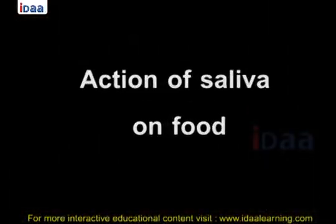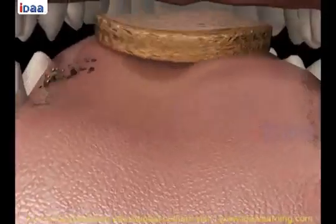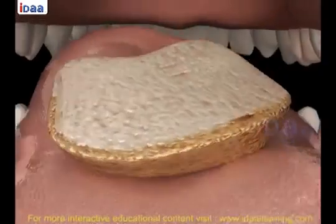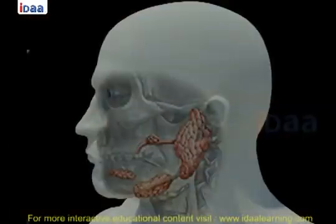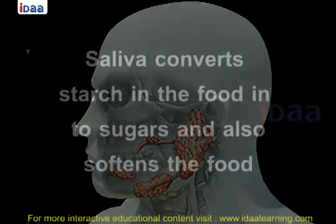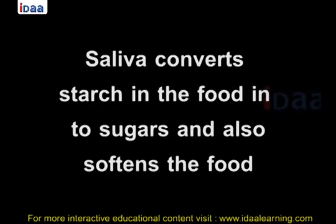Action of saliva on food: During chewing, food mixes with saliva. Saliva is secreted from salivary glands located on the lower jaw, between the tongue and teeth. Saliva converts starch in the food into sugars and also softens the food.